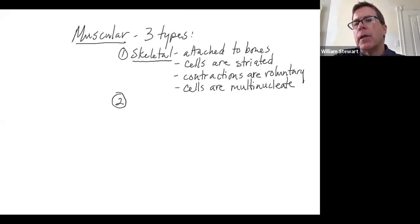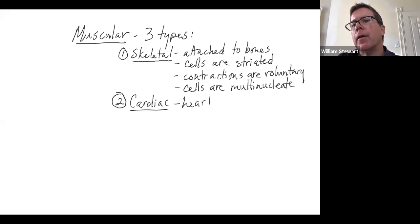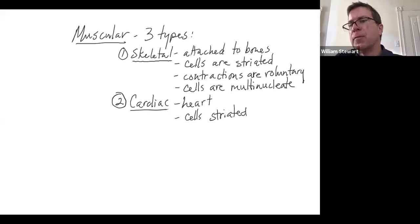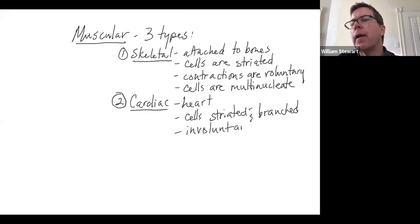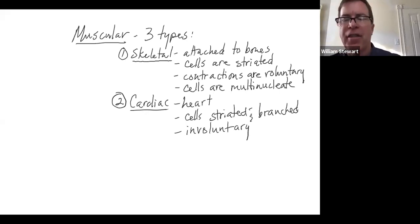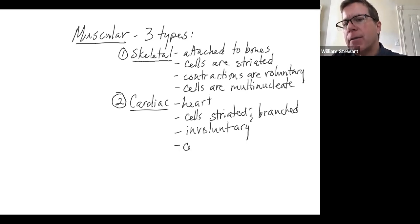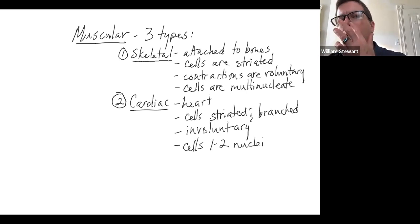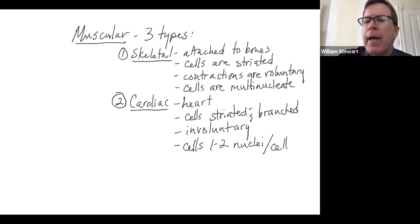Second, cardiac muscle is only found in the heart. Its cells are also striated and branched. Contractions are involuntary — we do not have conscious control over them. You can't just think and speed up or slow down your heart rate. The cells typically have one to two nuclei per cell, so they can have more than one nucleus but not nearly as many as skeletal muscle cells.